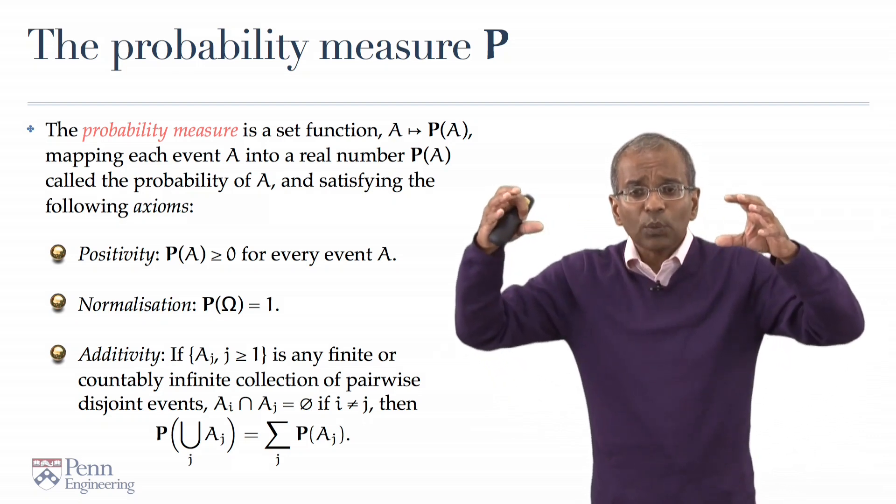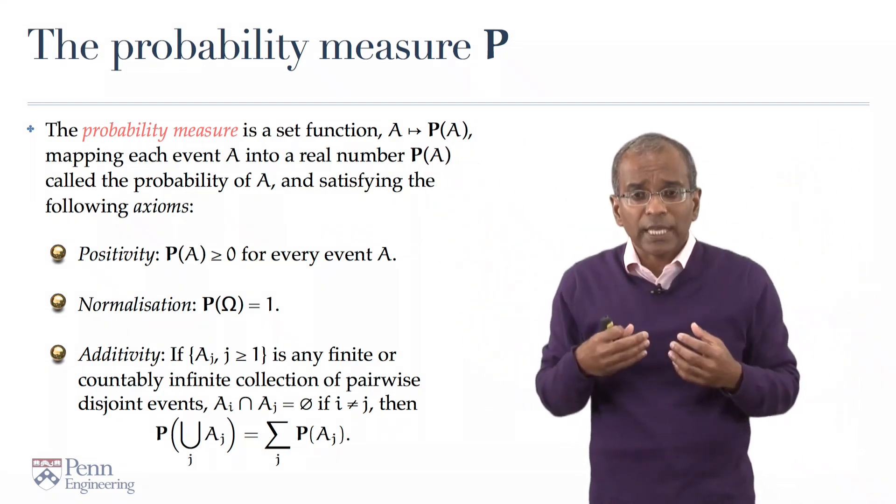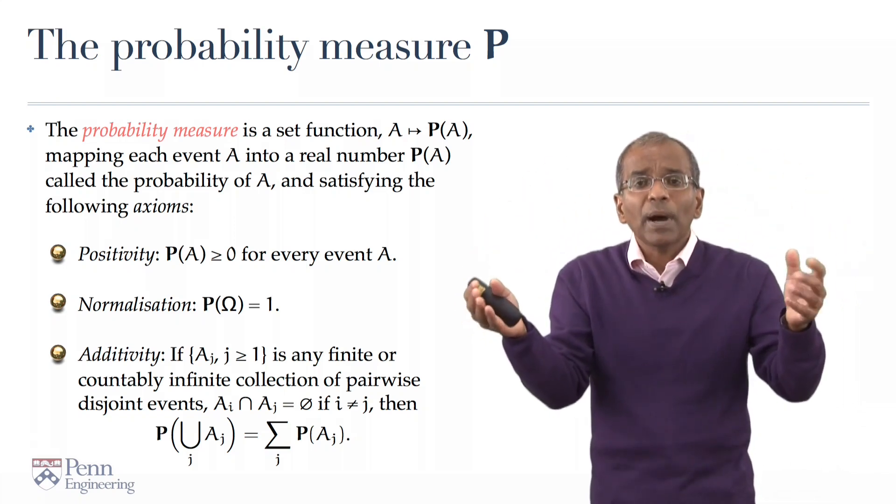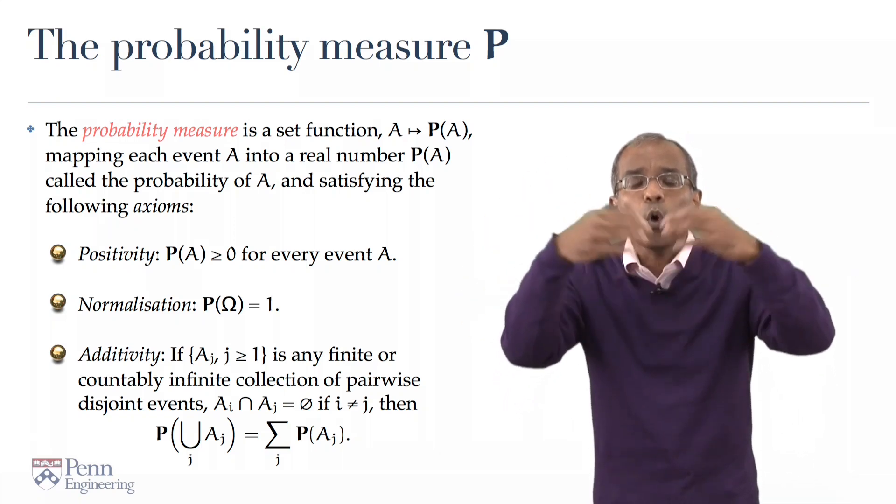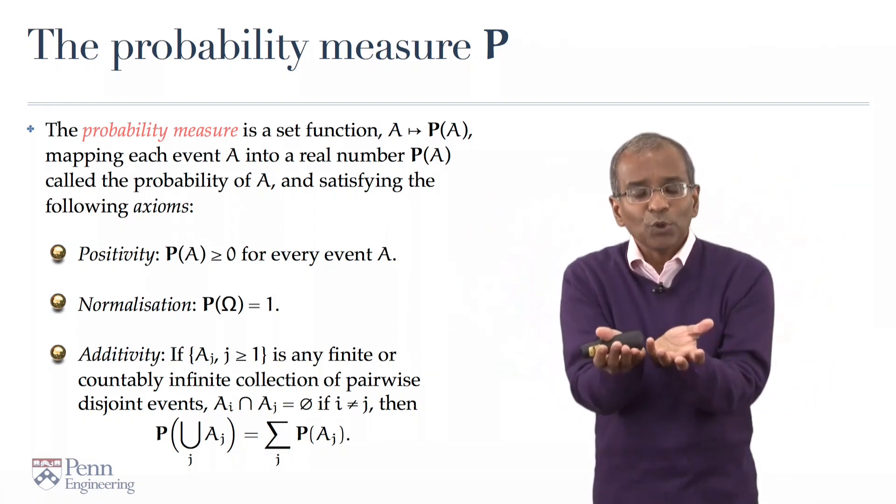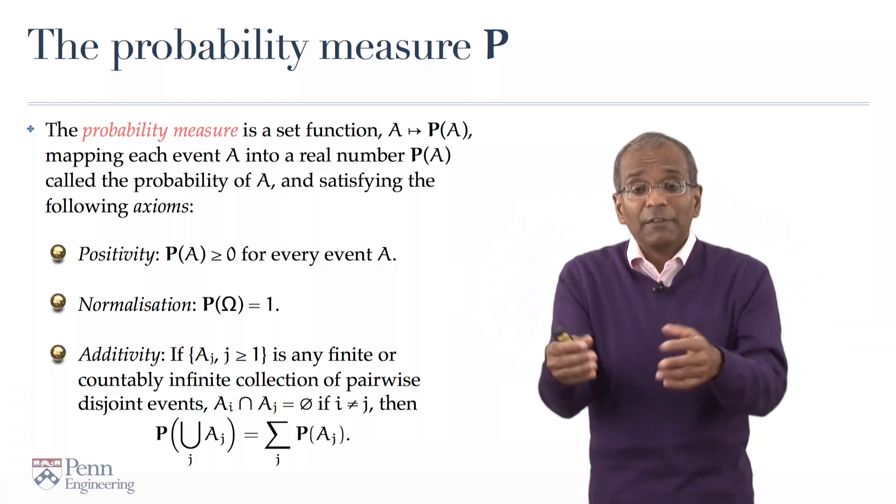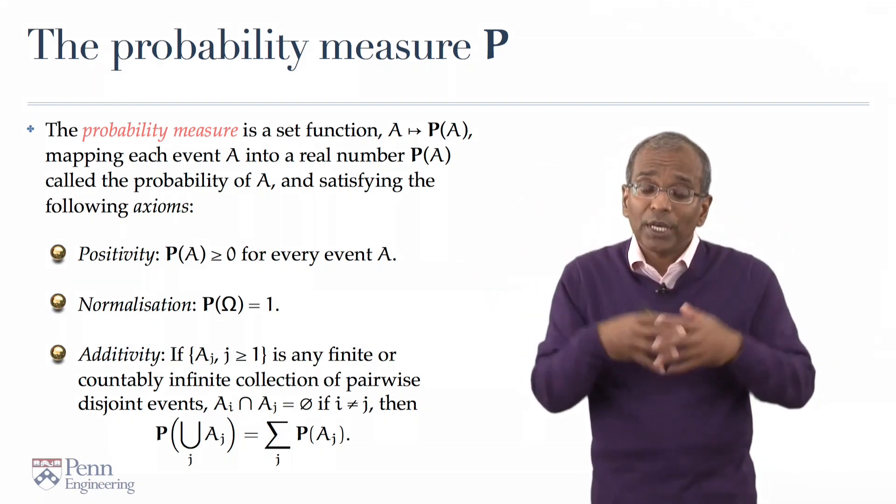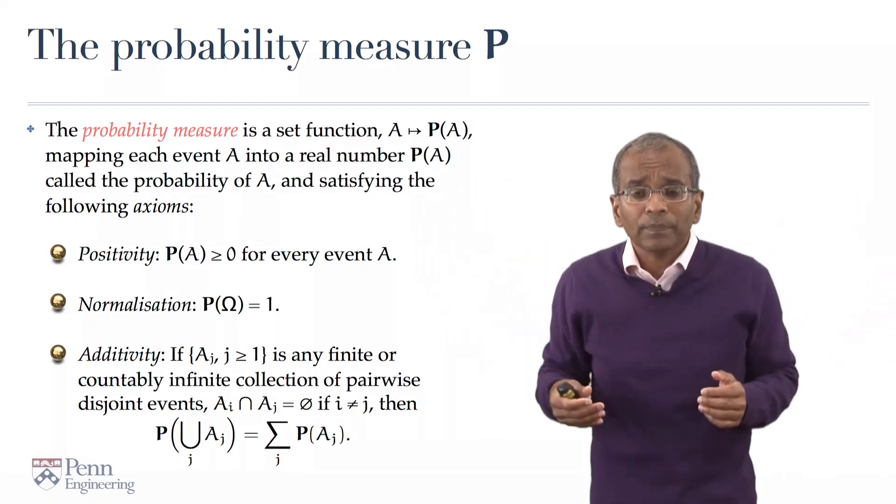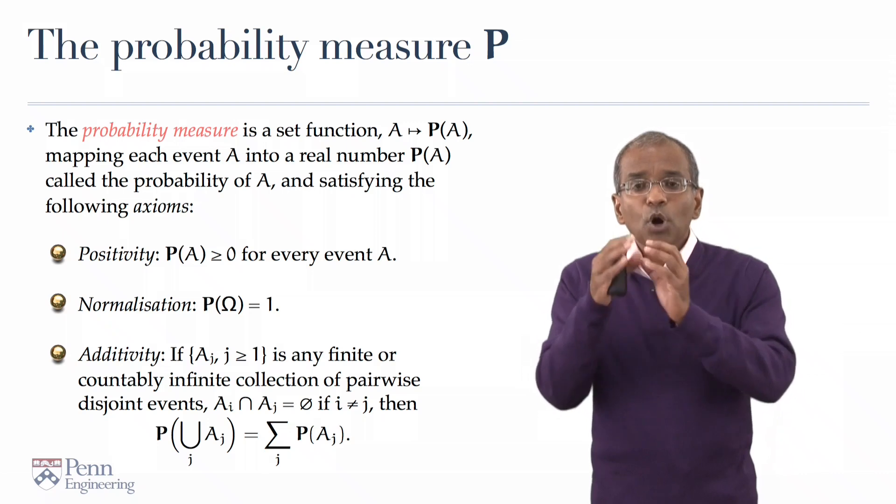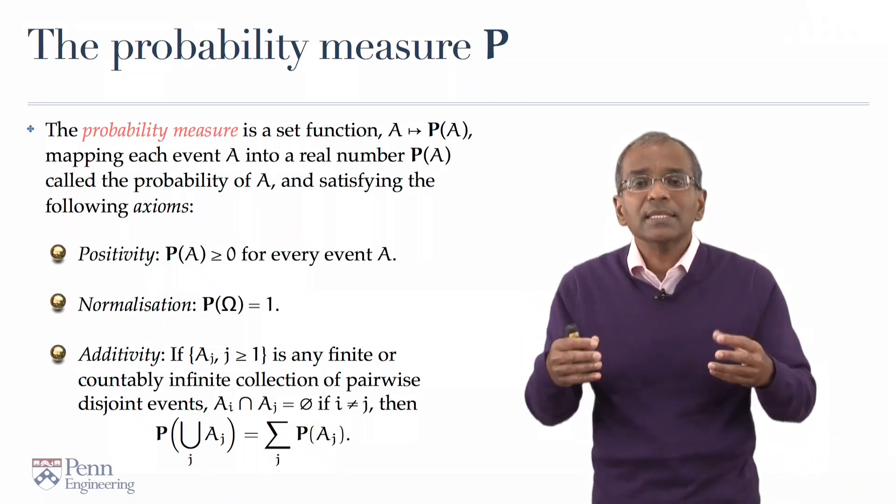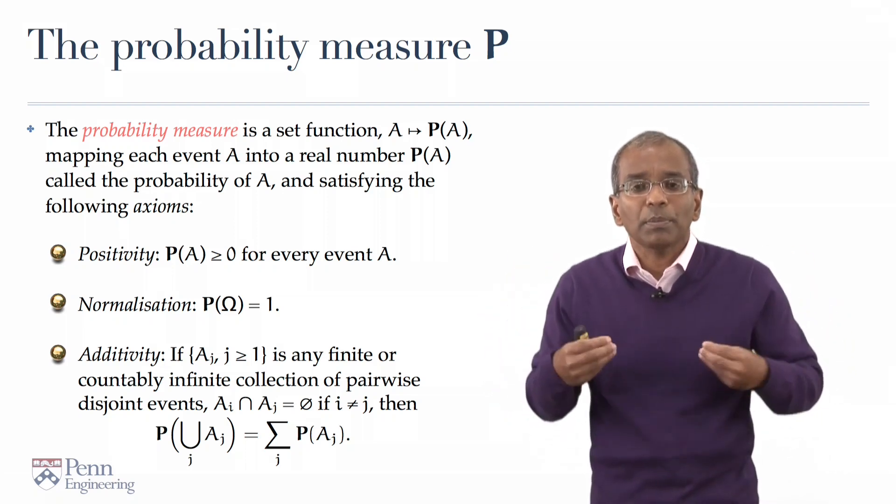Now, if you start with a collection of pairwise disjoint sets, and you say, well, let us form a new event by taking the union of all of these sets. In other words, the union is a new event which occurs if A1 occurs, or A2 occurs, or A3 occurs, and so on. The principle of additivity says the probability of a union of disjoint sets is a sum of the constituent probabilities.